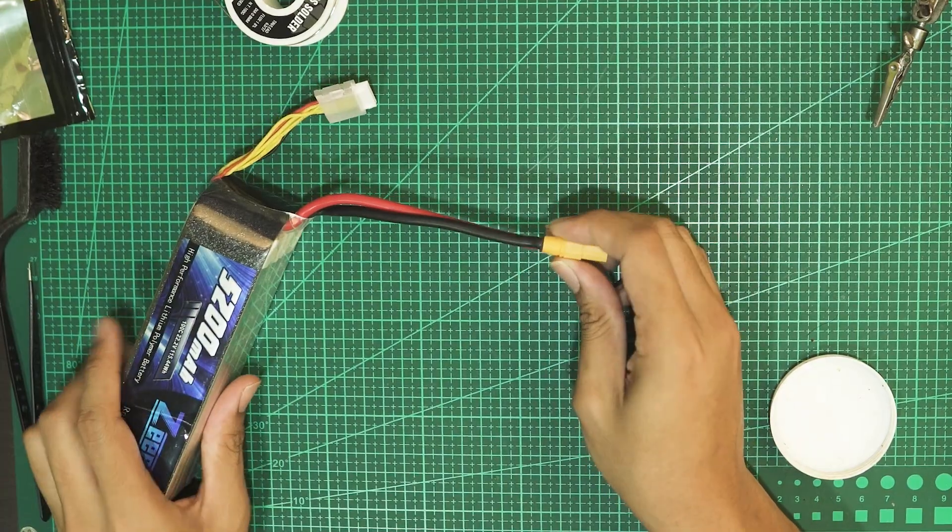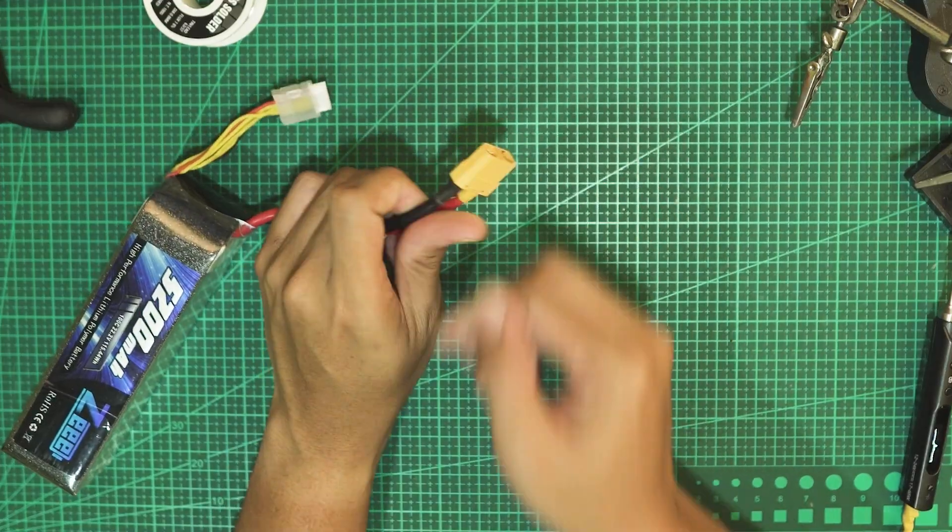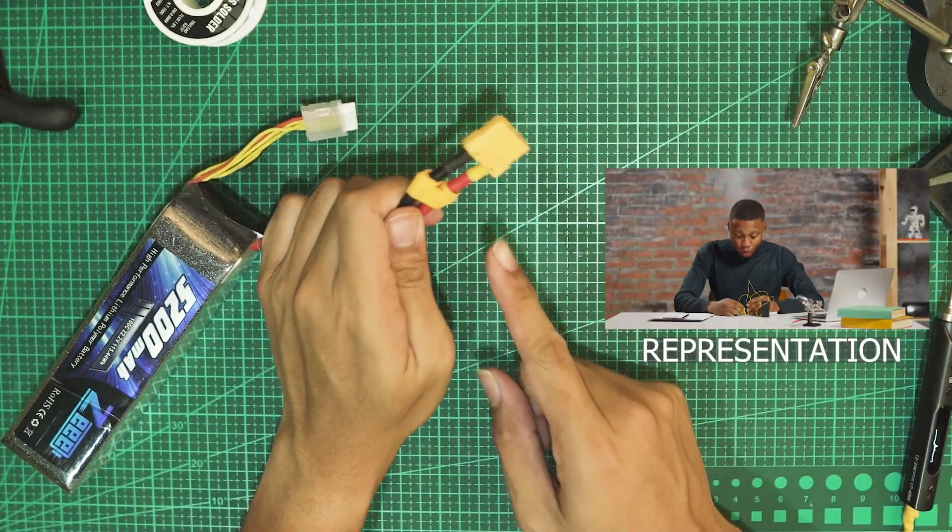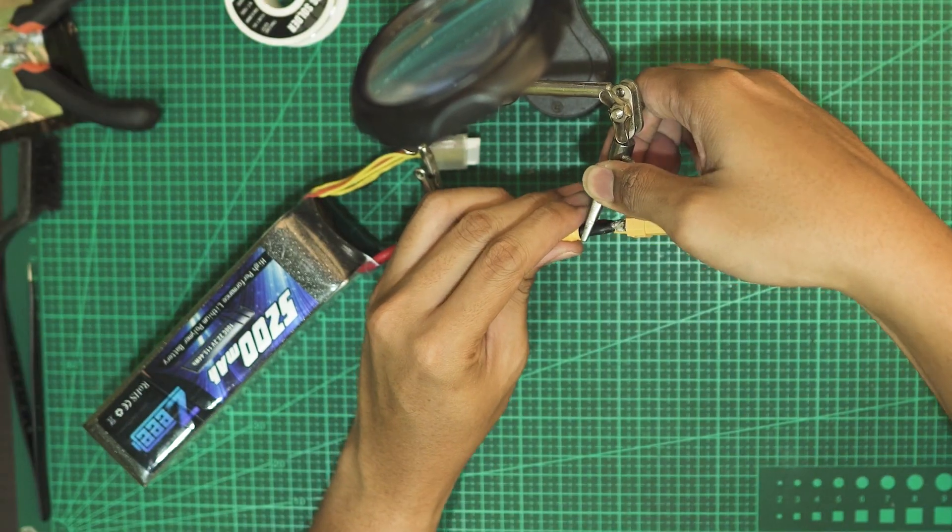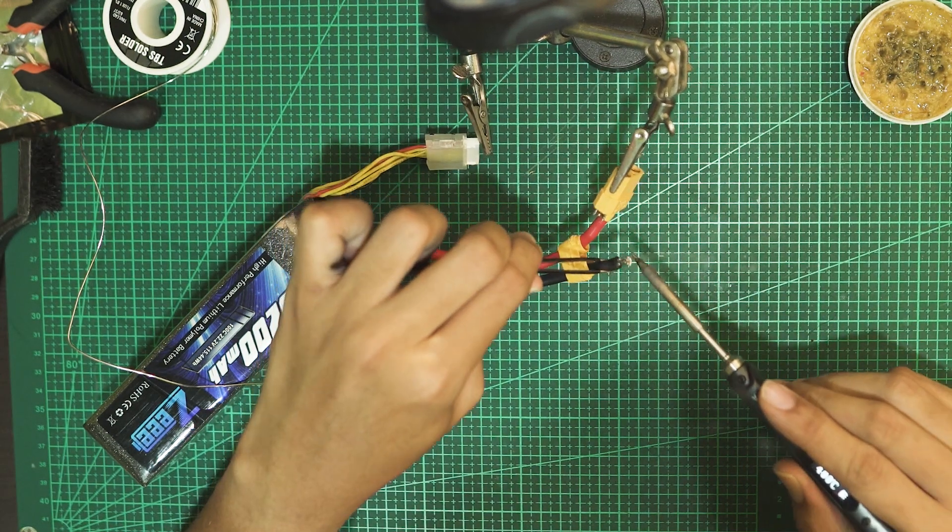Let's move on to the lipo leads. So I'm going to remove my XT90. Now to keep safe, you never want the negative and positive lead of your battery to ever touch or you'll risk a short circuit and possibly a fire. So I'll work on this one by one. I'll start by desoldering my negative lead only.